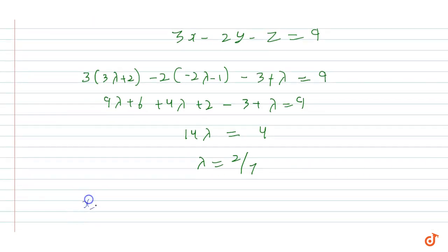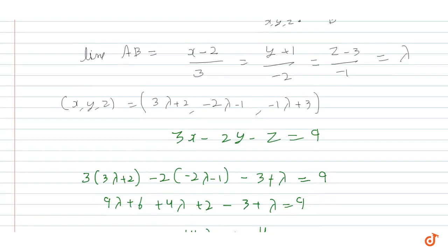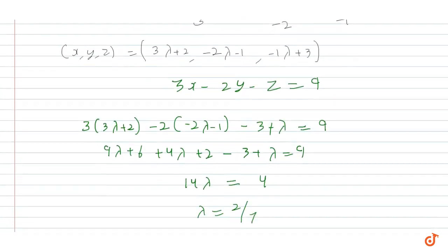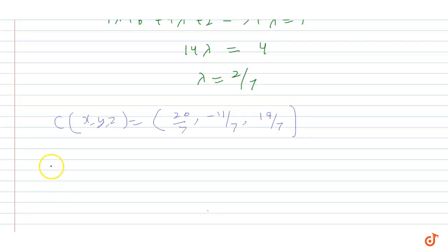Substituting λ = 2/7 into the parametric coordinates: x = 3(2/7) + 2 = 20/7, y = -2(2/7) - 1 = -4/7 - 7/7 = -11/7 (i.e., -22/14), and z = -(2/7) + 3 = 19/7. These are the coordinates of point C.